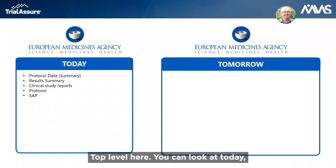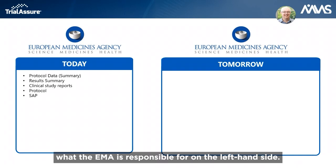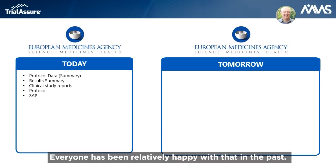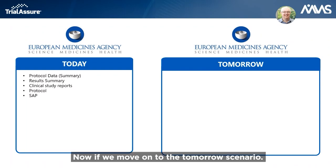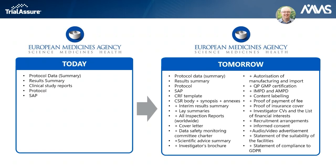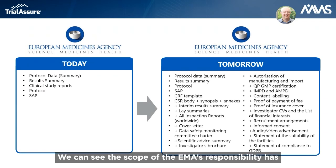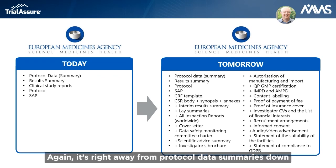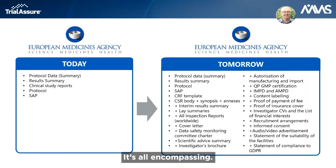At a top level, you can look at what the EMA is responsible for today on the left-hand side — it's relatively brief, and everyone has been relatively happy with that in the past. Moving to the tomorrow scenario, we can see the scope of the EMA's responsibilities significantly expanded, ranging from protocol data summaries all the way down to statements of compliance with GDPR — all-encompassing.